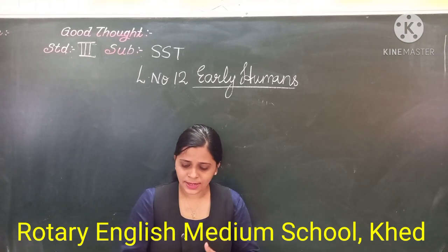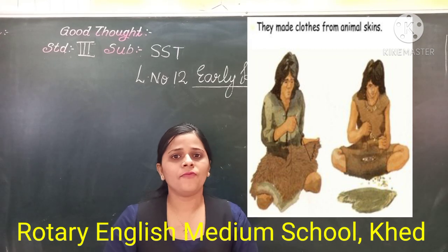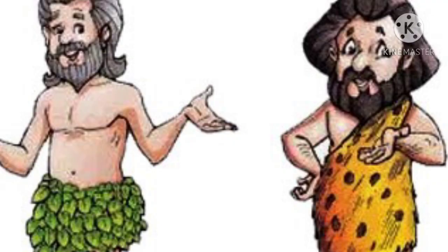Later on, they started covering their body with the skin of animals and the bark of trees or leaves. You can see here in the image — with tree leaves and also with animal skin they started covering their body. And this helped them to stay warm during winter.